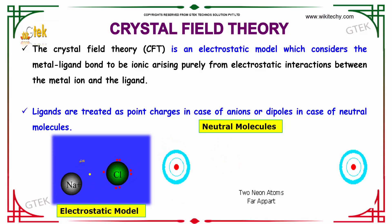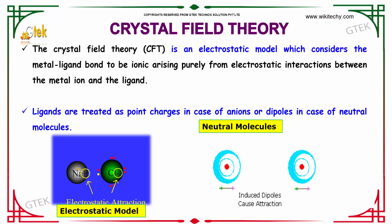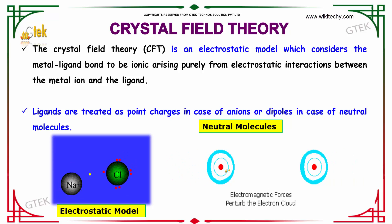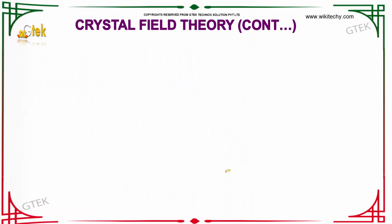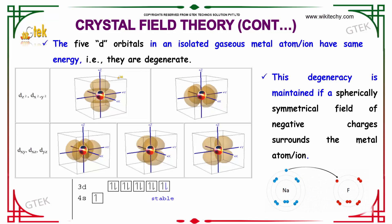Ligands are treated as point charges in case of anions or dipoles in case of neutral molecules. The five d orbitals in an isolated gaseous metal atom or ion have the same energy. These are dxy, dxz, dyz, dz², and dx²-y².